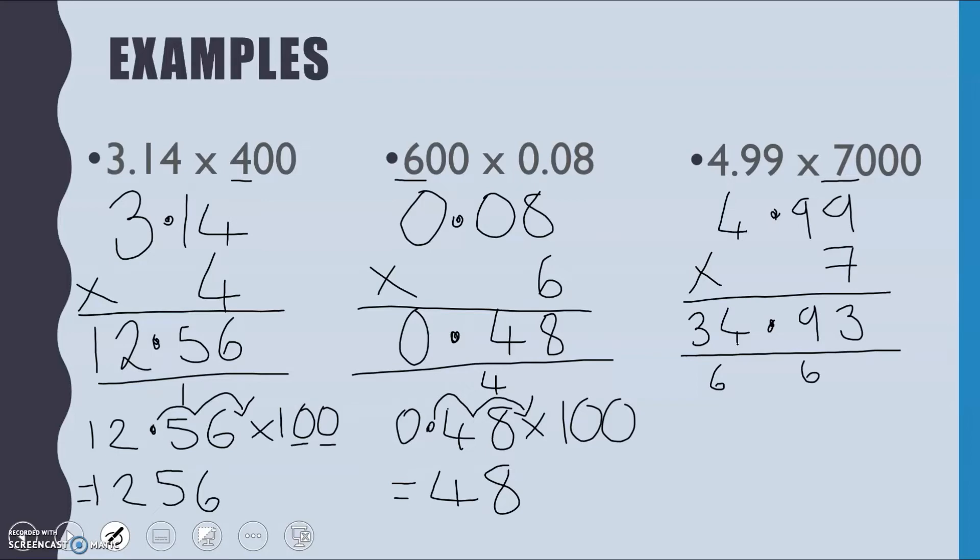Because then we've still got to times that by 1,000. So 34.93 times by 1,000. Well, this time I've got three zeros: 1, 2, 3. So we're going to have to move back three places: 1, 2. So when I move back the third time, I've really got a 0 in here. So my overall answer is going to be 34,930.